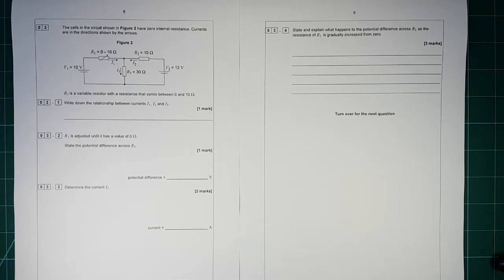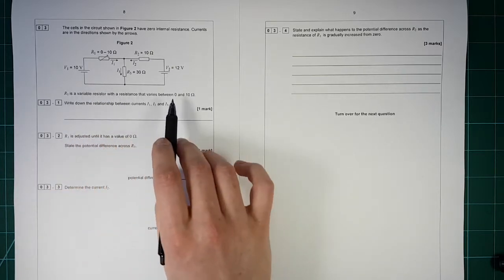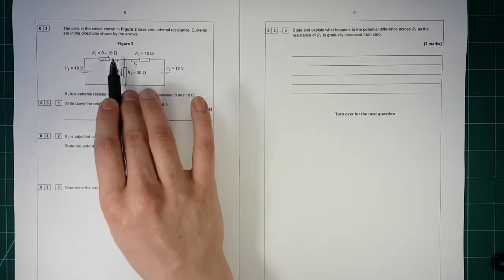Question 3. The cells in this circuit, figure 2, have zero internal resistance. Currents are in the direction shown by the arrows. R1's variable resistance can go between 0 and 10, so that's written up there.